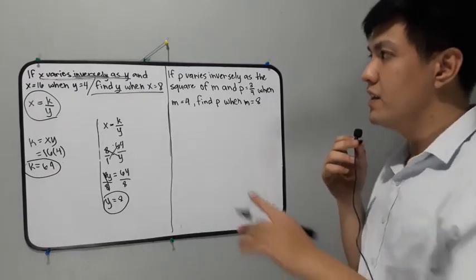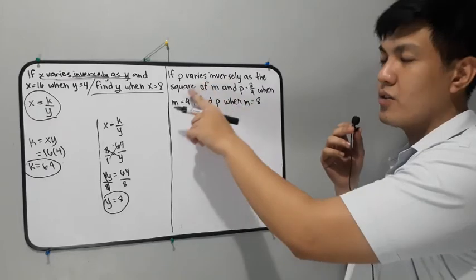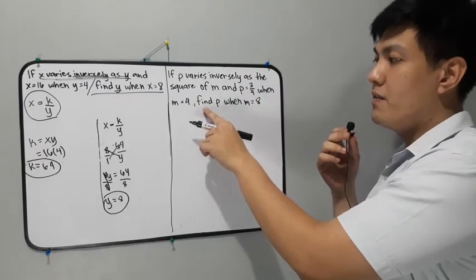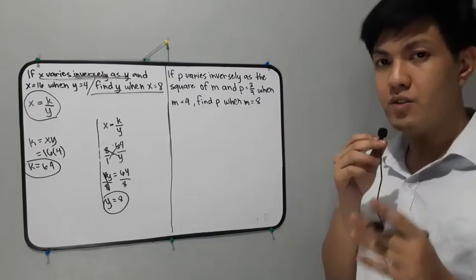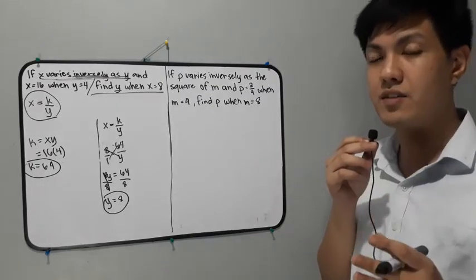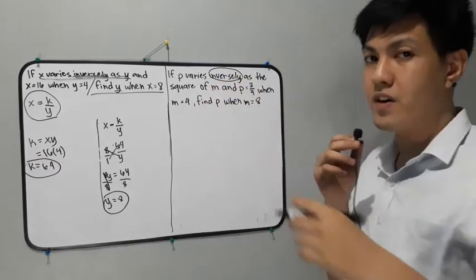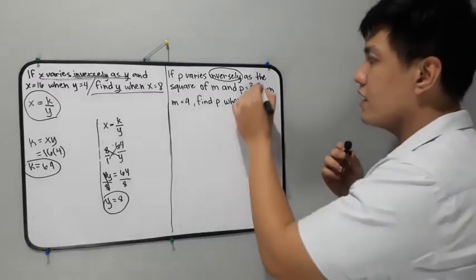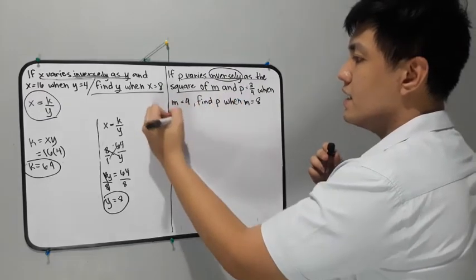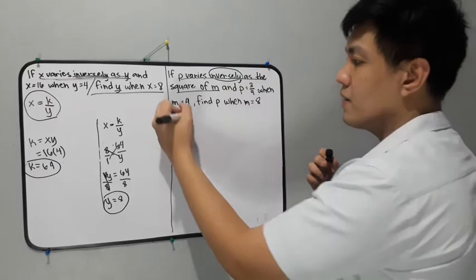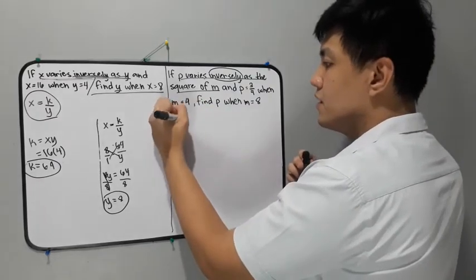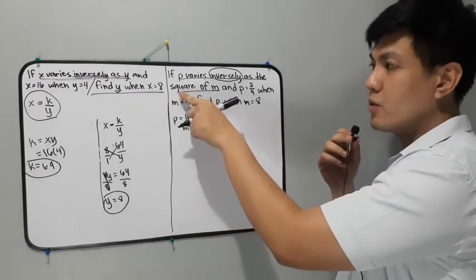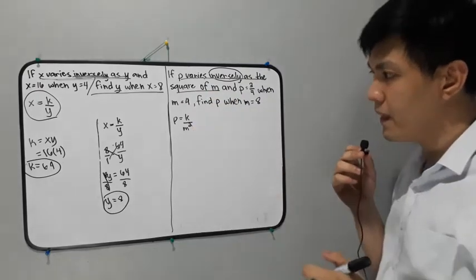Another example: if P varies inversely as the square of M and P is equal to 3/4 when M is equal to 4, find P when M is equal to 8. We identify the given as inverse variation because of the word 'inversely.' Then we write the equation. P varies inversely as the square of M, so M is in the denominator: P is equal to k over M squared. Don't forget the exponent because of the word 'square.'